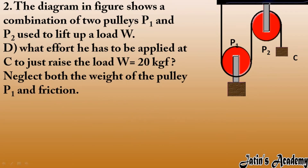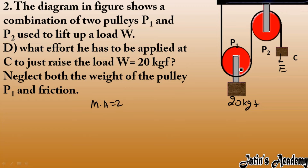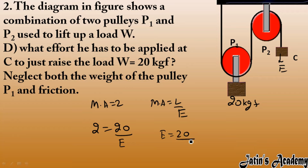What effort must be applied at C to raise a load of 20 kgf? The whole combination has mechanical advantage of 2 (movable pulley). Mechanical advantage = load ÷ effort, so 2 = 20 ÷ effort. Therefore effort = 20 ÷ 2 = 10 kgf. A movable pulley always provides mechanical advantage greater than 1.